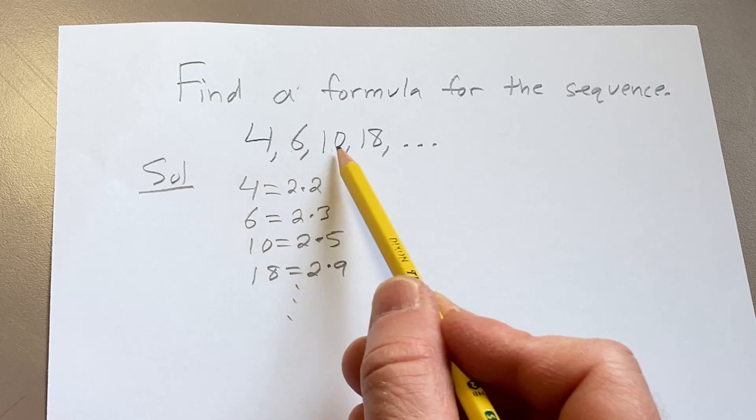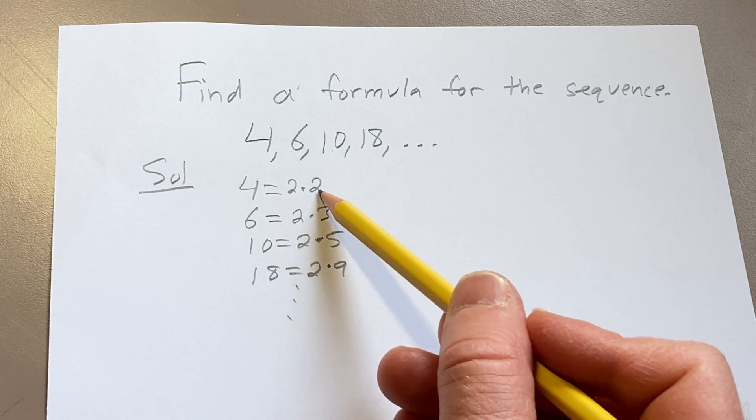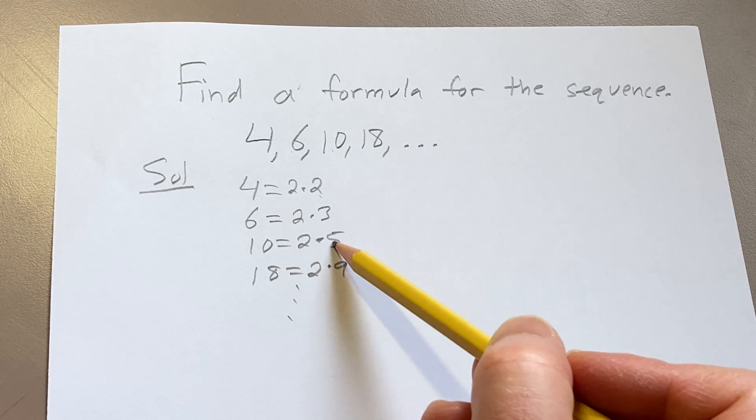Basically, each of these terms is being multiplied by 2, and then we have the sequence here: 2, 3, 5, 9.